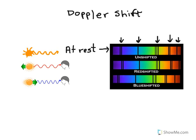But what if the star is moving? In the first case, we see a star moving away. That has the effect of stretching the wave out and forming a longer wavelength. Notice the wavelength is a constant wavelength — it is just longer than our original wavelength. Because the wavelength is longer, and the longer wavelength end of the spectrum is the red end, we call that phenomenon a red shift.